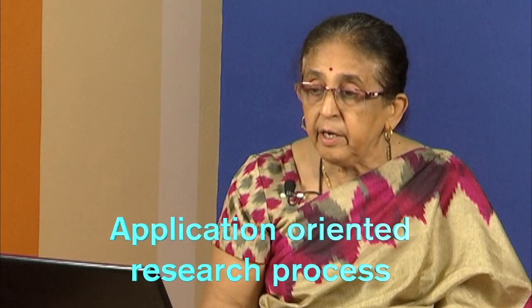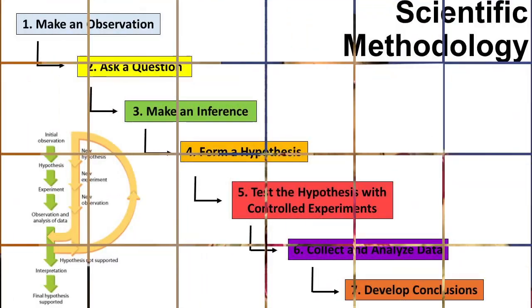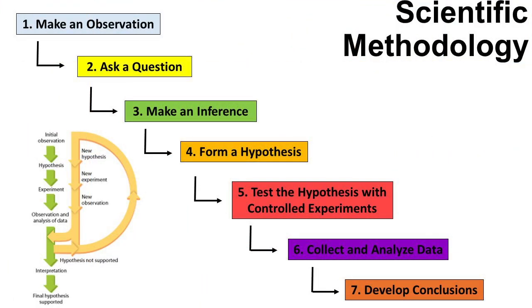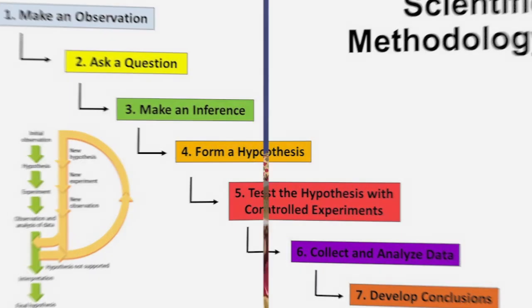Application-oriented research process: it is obvious that research is a process and it has to have certain orientation, objective and planning to achieve results. Scientific research is a structured inquiry that utilizes acceptable scientific methodology to solve problems and create new knowledge that is generally applicable. Scientific methods consist of systematic observation, classification and interpretation of data. All well-designed, conducted research has potential application.